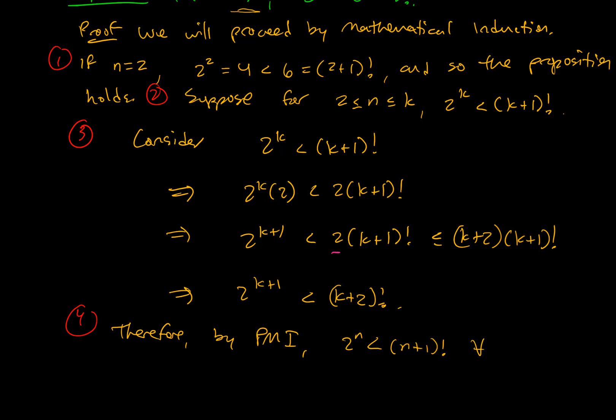Therefore, by the principle of mathematical induction, 2 to the n is less than n plus 1 factorial for all n greater than or equal to 2. End of proof. The tricky step worked because n is always greater than or equal to 2, so k plus 2 is always at least 2, giving us what we needed. Mathematical induction is weird at first, but it's definitely worth going over — about 80 percent of my dissertation dealt with induction proofs. It's a very powerful technique to add to your arsenal.